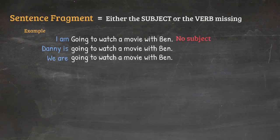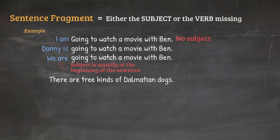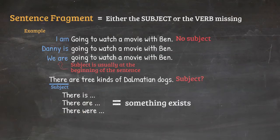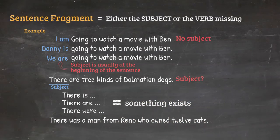Although many sentences have a clear subject which is almost always at the beginning of the sentence, there are times when the subject is not so clear. For example, it is common to have a sentence like 'there are three kinds of Dalmatian dogs.' Here the subject is not clear — it is not a name, a place, or an object. When we say 'there is,' 'there are,' 'there were,' and so on, we are basically saying that something exists. The subject is implied in this case. So when you see a sentence like 'there was a man from Reno who owned 12 cats,' know that it is not a fragment even though it does not have a clear subject.